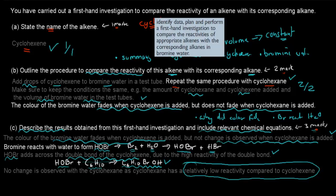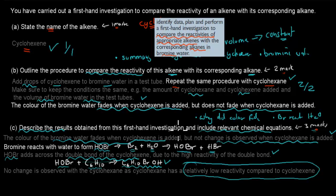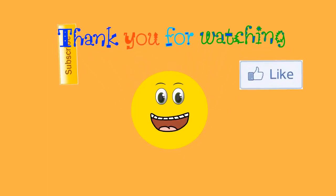This question comes from your first-hand investigation dot point: plan and perform a first-hand investigation to compare the reactivity of an appropriate alkene with the corresponding alkane in bromine water. The appropriate alkenes were cyclohexene and cyclohexane. I hope that was useful — thank you for watching.